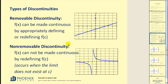This second function could not be made continuous by redefining a single point. You can see it has a vertical asymptote. This is called non-removable discontinuity — f of x cannot be made continuous by redefining f of c.